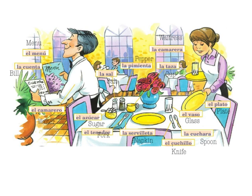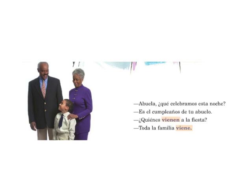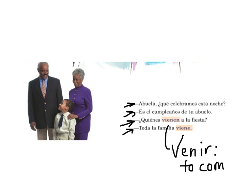Please make sure you have these words written down before you move on to the next slide. On this final slide, the grandparents and their grandson are talking again. He asks: Abuela, ¿qué celebramos esta noche? — Grandma, what do we celebrate tonight? And the grandma answers: Es el cumpleaños de tu abuelo — the birthday of your grandfather. Y él pregunta: ¿quiénes vienen a la fiesta? — Who comes to the party? Y la abuela responde: toda la familia viene — all of the family comes. Both vienen and viene are from the verb venir, which means to come. It's an IE to IE stem changer, so that's one of the other grammar points we'll work on this chapter. Please make sure you have the verb venir written down on your sheet.